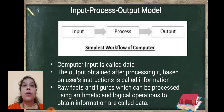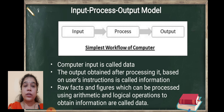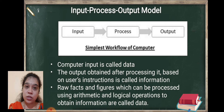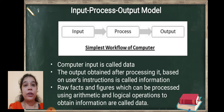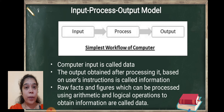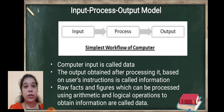Computer works according to the input, process, and output model. Computer takes input from the user which is in the raw format, hence it is known as raw data. Means computer receives input in the raw data format.